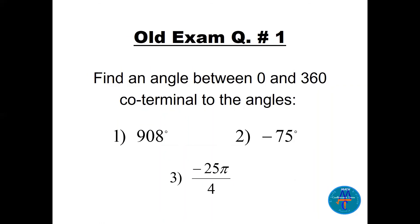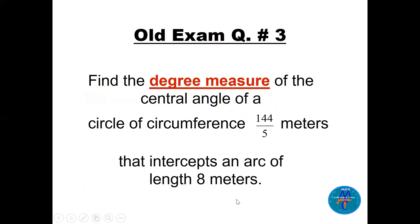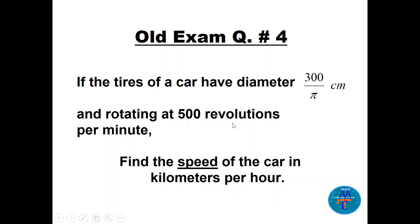Now I'll leave some practice questions. Question one: find coterminal angles. If X is the smallest positive angle coterminal with −29π/5 and Y is the supplementary angle of 11π/18, find X + Y in degrees. Question two: find the degree measure of the central angle in a circle of circumference 144/5 meters that intercepts an arc of length 8 meters.